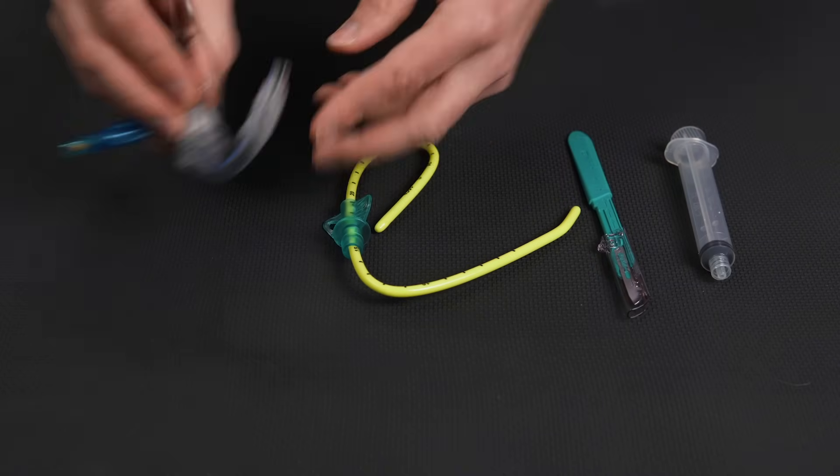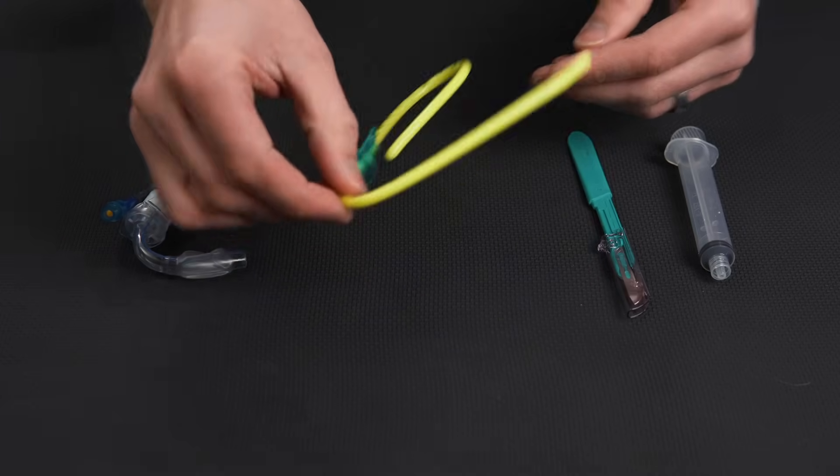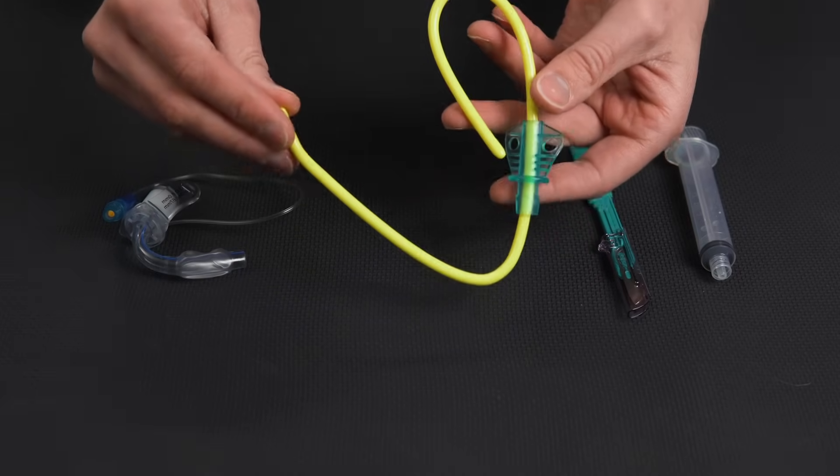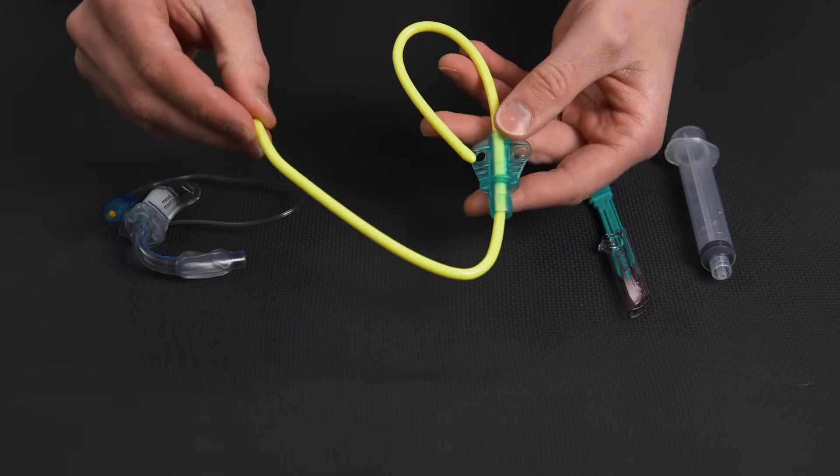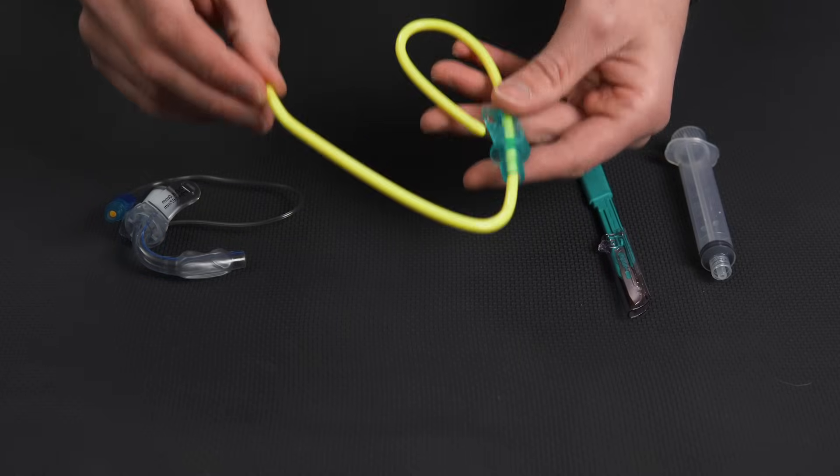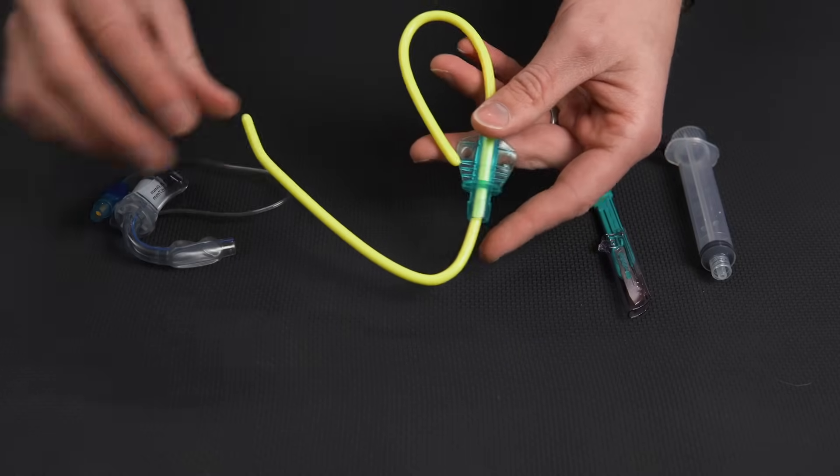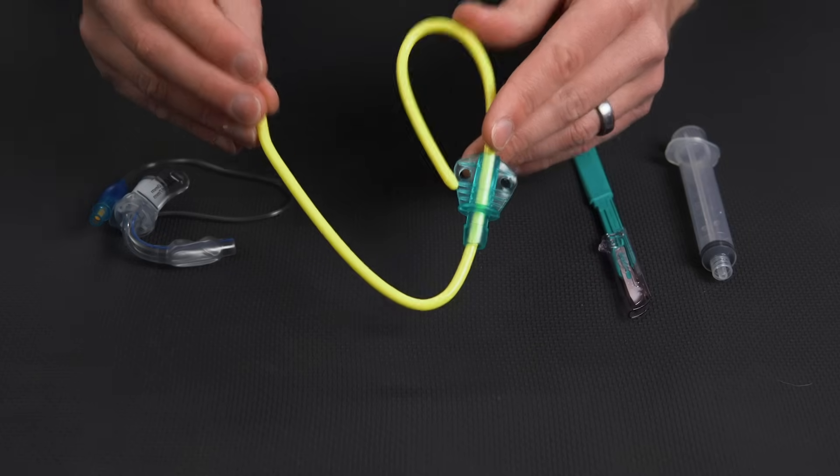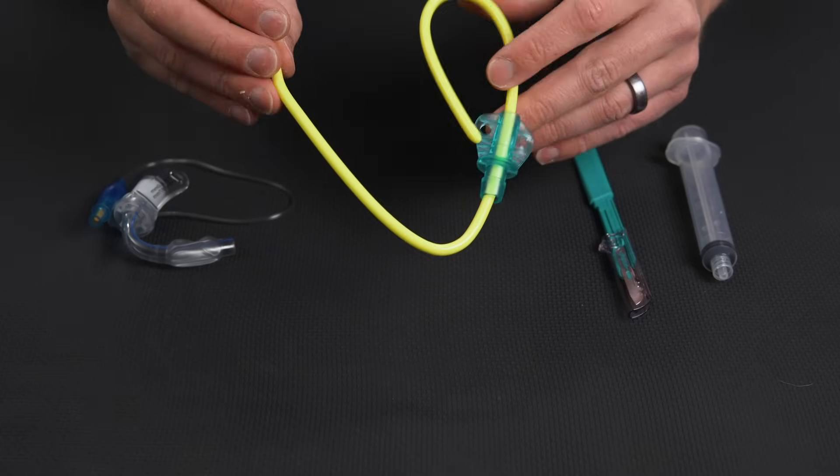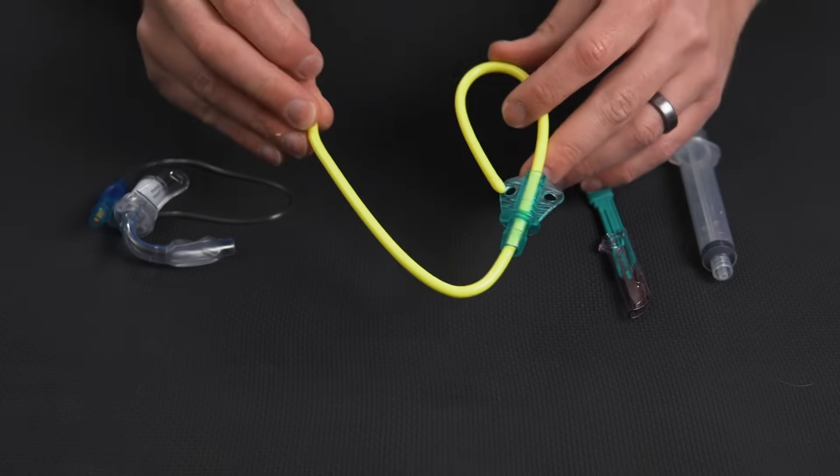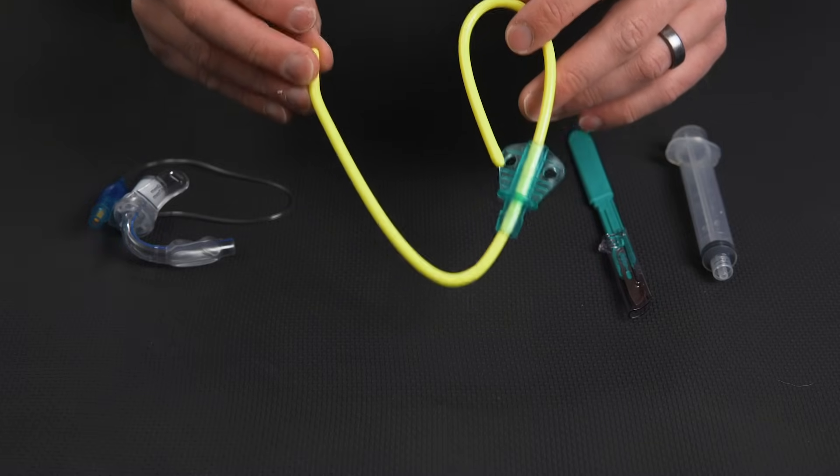Now the second thing you're going to need is some kind of introducer. I like to use bougies. This one is a specialized one that actually comes with this tube preloaded on it from North American Rescue. This just allows you to get this in place and secure the tube and not lose your spot.